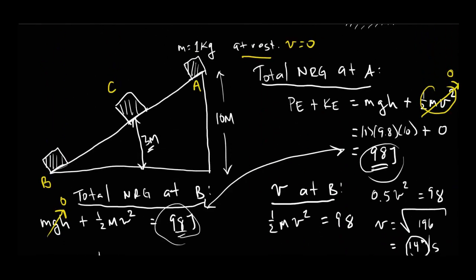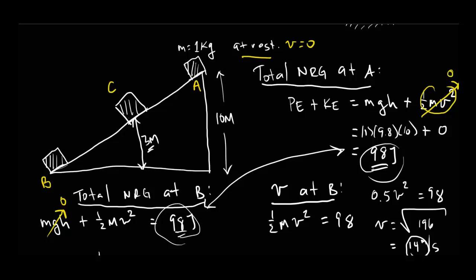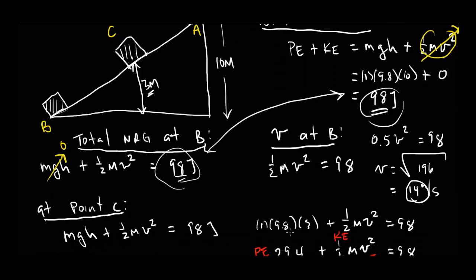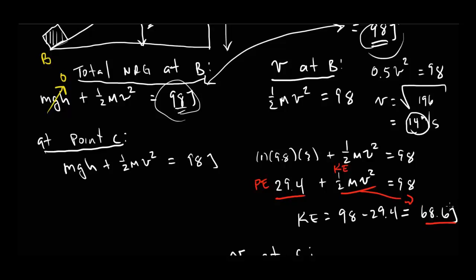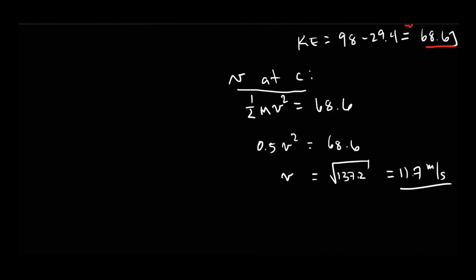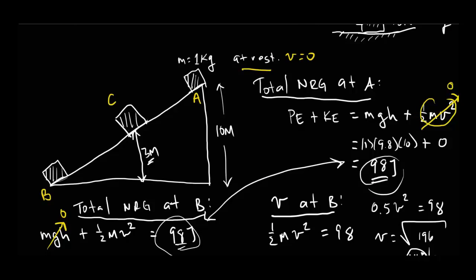That's an example of an energy conservation problem. We had a frictionless ramp with a block at the very top — we calculated the total energy as 98 joules, all potential at the top. At point B it's all kinetic. At point C, the block has both potential energy (29.4 J) and kinetic energy (68.6 J), adding up to 98 joules. That was a quick introduction to energy conservation — we'll do more practice problems next class.